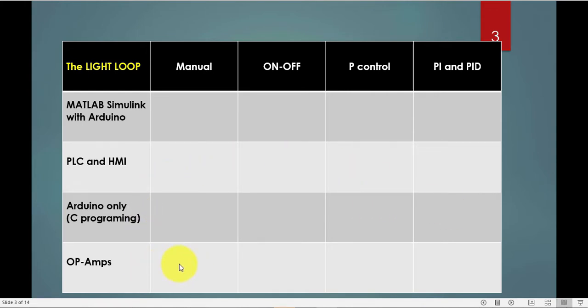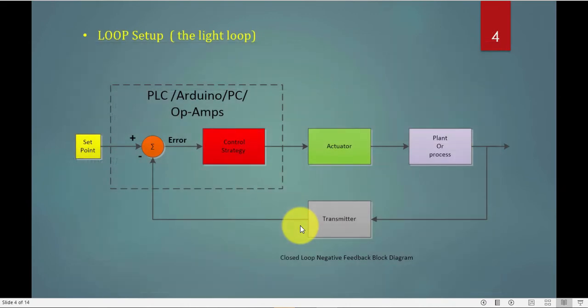We will see diagrams of op amps to demonstrate manual control, on-off control, P control, PI and PID. First thing first, we need to be familiar with the closed-loop negative feedback block diagram. This is a diagram you see in any process control. You have a set point which is the desired value. In our case, it's the intensity of the light.